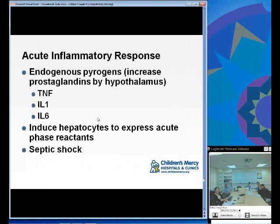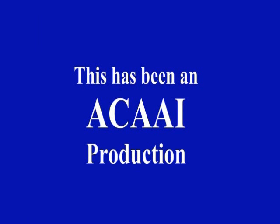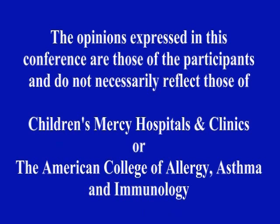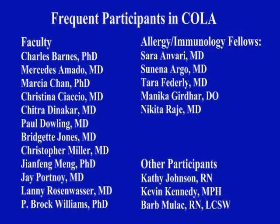Don't get too overwhelmed with this chapter. Get familiar with pattern recognition receptors, know a lot of detail about TLRs and NK cell signaling, and recognize the other components of the innate immune system. Complement will be covered later and will be a huge source of testable information. This has been an ACAAI production. To learn more, go to ACAAI.org.